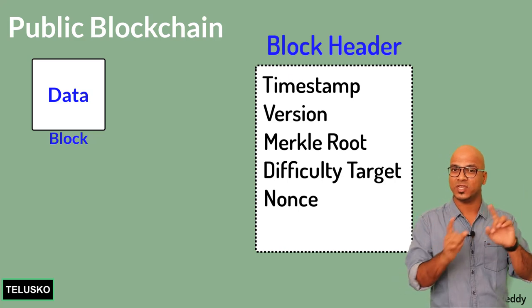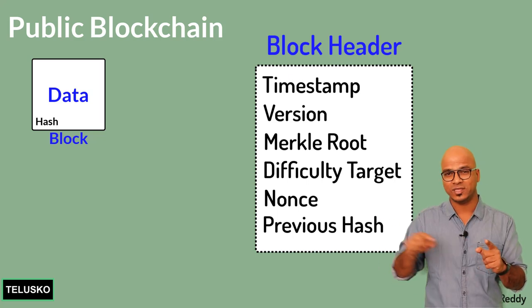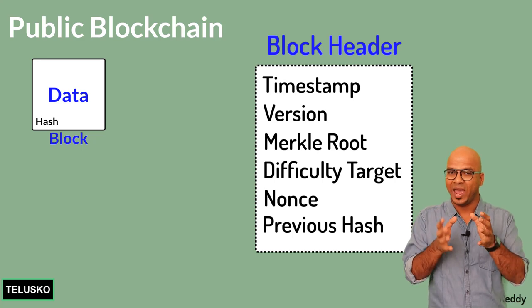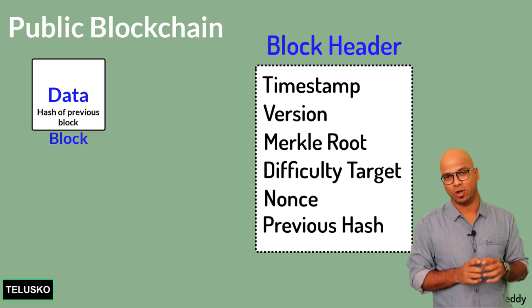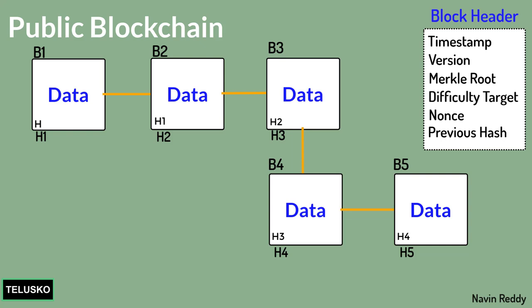There is one more field: the previous hash. Every block contains the hash of the previous block — that's how you create the chain. For example, with five blocks: the second block holds the hash of the first, the third holds the hash of the second, and so on. This lets you track backwards through the chain.